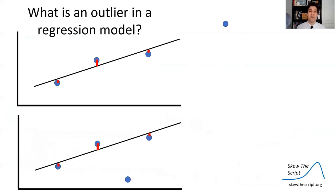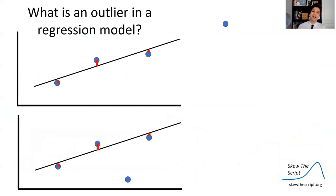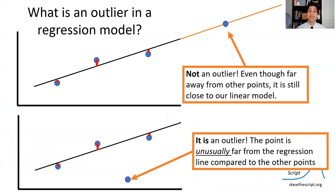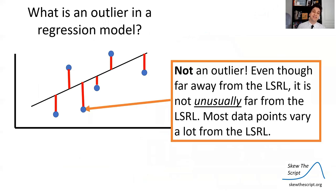Let's talk about the effect of outliers. What is an outlier in a linear regression model? A data point far from the other data points is not necessarily an outlier if it's still close to our linear model when extended. However, a data point that is unusually far from the least squares regression line given its X-value is an outlier. A point that's far from the line but not unusually far compared to other points in a weak correlation is not an outlier.